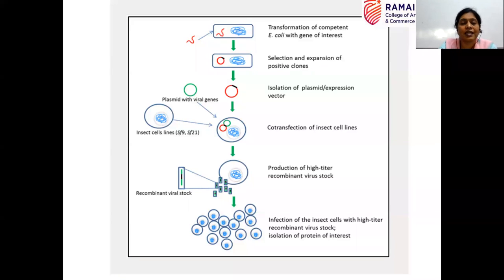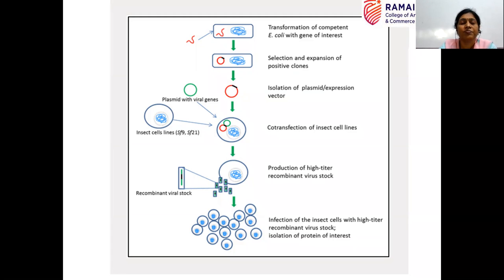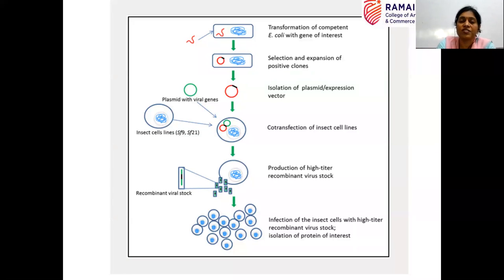This is how insect cell lines are used as a protein expression system. Insect cell lines, and also mammalian cell lines which we will study later, are generally used for the expression of eukaryotic proteins, because you cannot use bacteria as expression system for these — eukaryotic proteins, after they are synthesized, undergo several post-translational modifications which are not supported by bacterial expression systems.